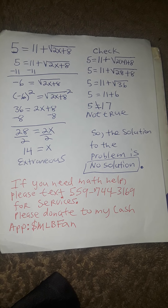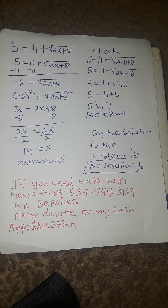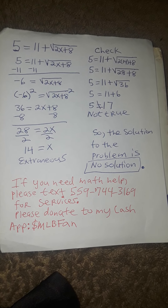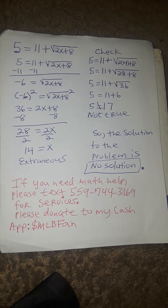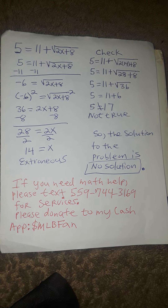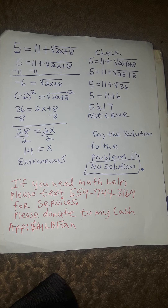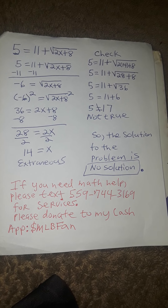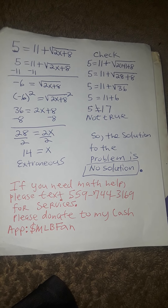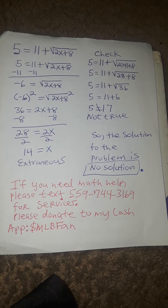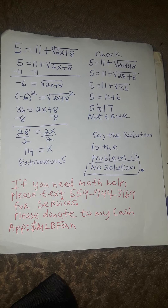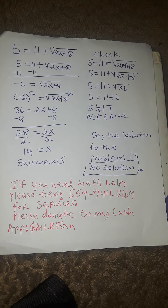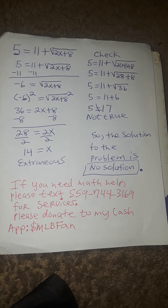So we have 5 is equal to 11 plus the square root of 2 times 14 plus 8. This breaks down to 5 is equal to 11 plus square root of 36. So we will have 5 is equal to 11 plus 6. Then when we simplify that, this is not a true statement.